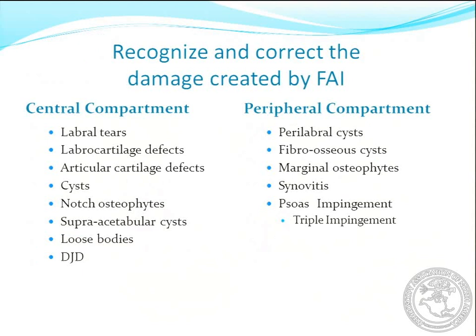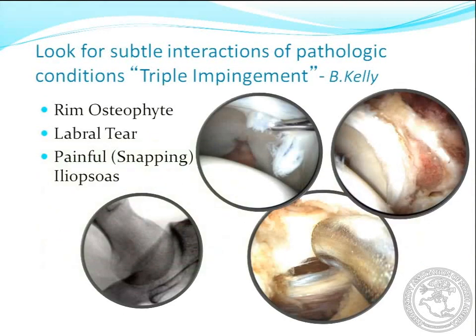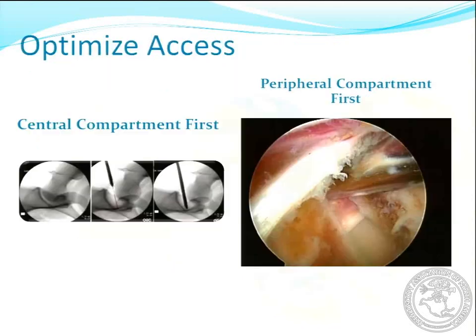Just understand yourself. Recognize all of the damage created by FAI in the central and peripheral compartment — there's a lot of damage from FAI that you should and need to correct. Plan to treat associated pathology such as supraacetabular cysts or a fibro-osseous cyst or bump. Look for subtle things, like what Brian Kelly taught us, where you might have triple impingement — a rim osteophyte, labral tear or labral cartilage delamination, and a snapping iliopsoas. Understand these things so you can treat them all in the same surgery, and you don't have to come back later for an iliopsoas release.